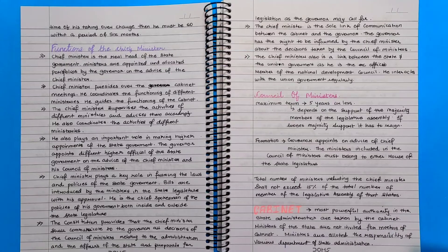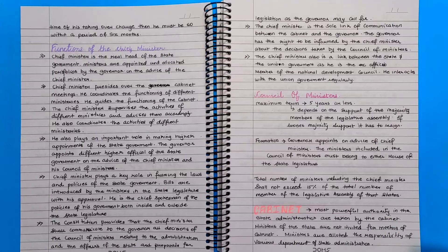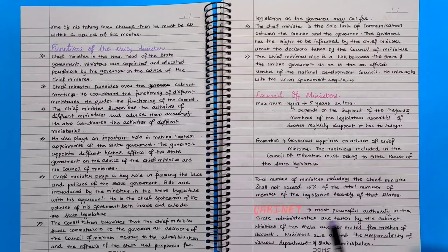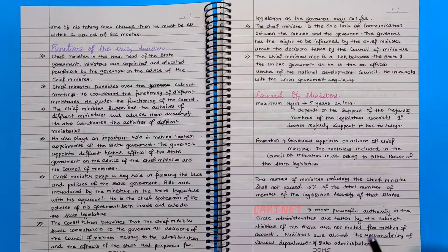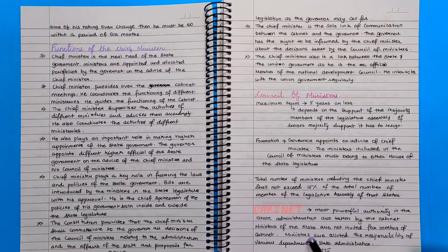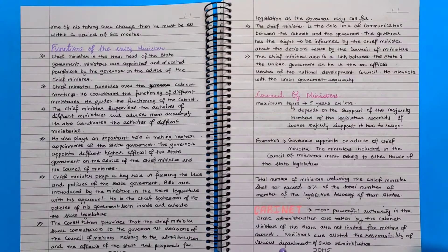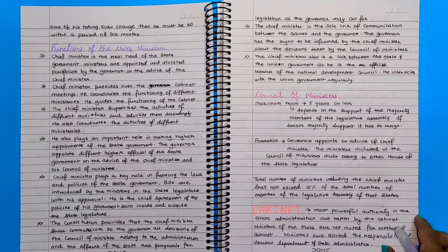Cabinet: Most powerful authority in the state. Administrators are taken by the cabinet. Ministers of the state are not invited for meetings of cabinet. Ministers are allotted the responsibility of various departments of state administration.